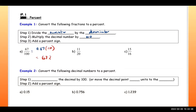Next: 11 divided by 20 is 0.55. Multiply by 100 and that gives you 55. Add the percent sign — that is our final answer. For the next one, we have 15 divided by 6.